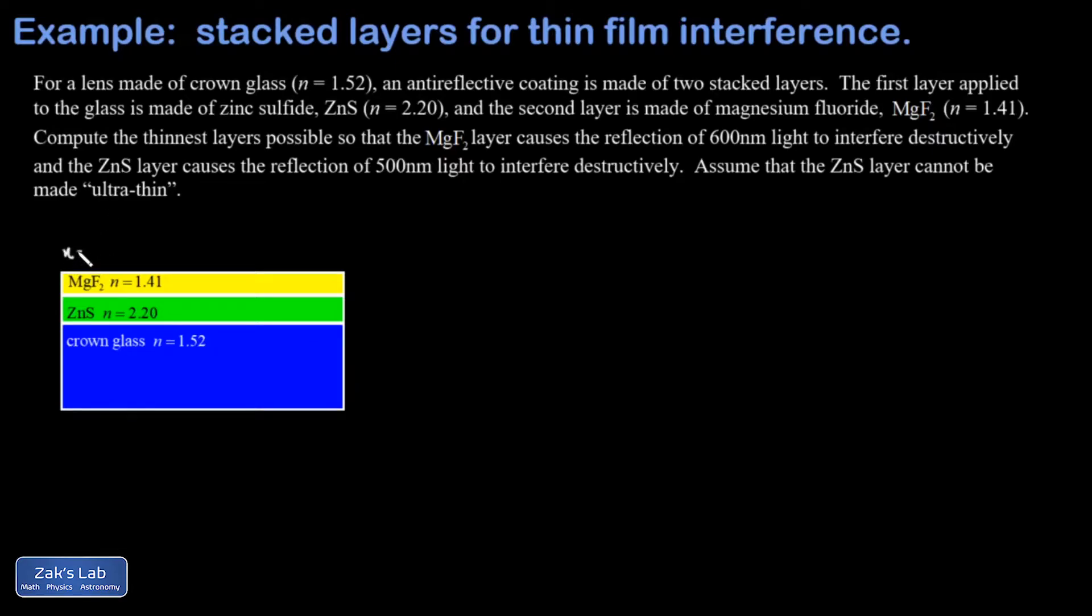By assumption, that's air outside the magnesium fluoride thin film with an index of refraction of approximately one. To keep track of things, I'm going to refer to the magnesium fluoride as material number one and the zinc sulfide as material number two.